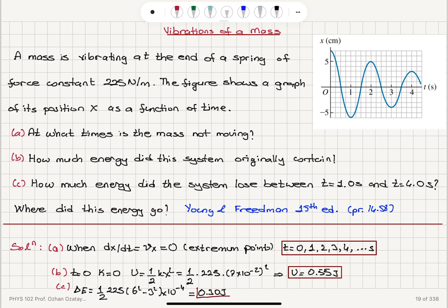So that's the energy lost during this time interval. Where did this energy go? It is converted. This energy is converted to internal energy. For example, via heating. So this could be, for example, the effect of friction on this oscillation.